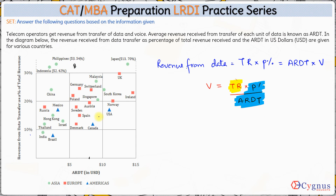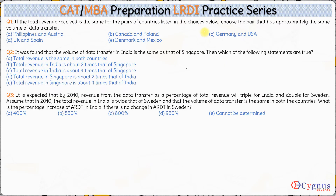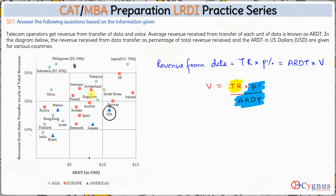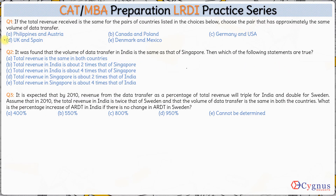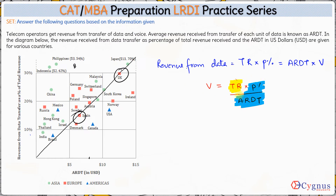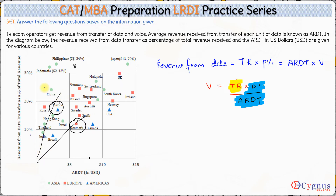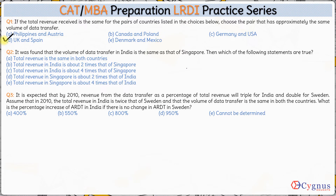For Canada and Poland — Canada is here and Poland is here — drawing a line through Poland, Canada is way off, so the ratio will be different. For Germany and USA — USA is here and Germany is here — they are on two different lines, so they will not have the same ratio. For UK and Spain — UK is here and Spain is here — both lie approximately on the same line from the origin, so the ratio of P% to ARDT is pretty much the same. Checking Denmark and Mexico — they are on two different lines. Hence, the answer to the first question is option D: UK and Spain.